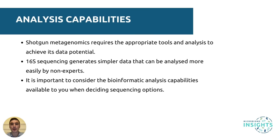Although shotgun metagenomic sequencing provides more data than 16S sequencing, the data potential can only be used with the appropriate tools and analysis. Metagenomic sequencing data is complex, and therefore requires more powerful computers, time, and expertise to generate meaningful results from large datasets. 16S sequencing, however, generates simpler data that can be analyzed more easily by non-experts. Before deciding on 16S sequencing versus shotgun sequencing, it is important to consider the bioinformatic analysis capabilities available to you. Microbiome Insights have a team of bioinformatic experts that are happy to help with your 16S rRNA or shotgun metagenomic sequencing studies.